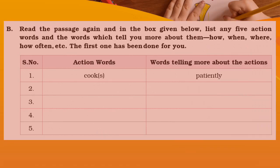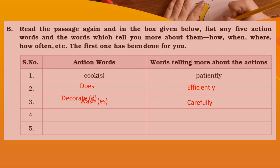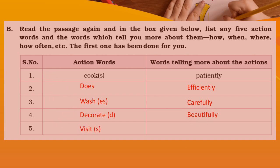So let's complete this chart. Action verb: does — adverb: efficiently. Verb: wash — adverb: carefully, meaning she washes with great care. Verb: decorate — adverb: beautifully. And last: verb: visit — adverb: often. It is very easy if you just do some practice — these are very easy. So please complete these worksheets in your PRT book. Thank you so much.